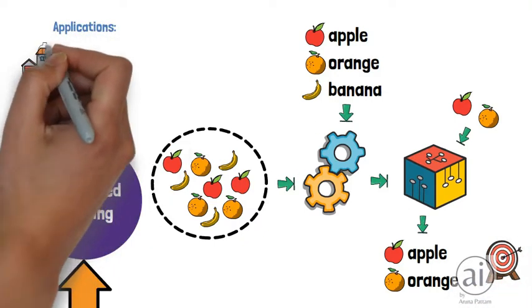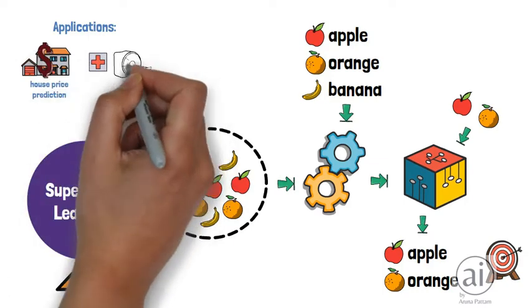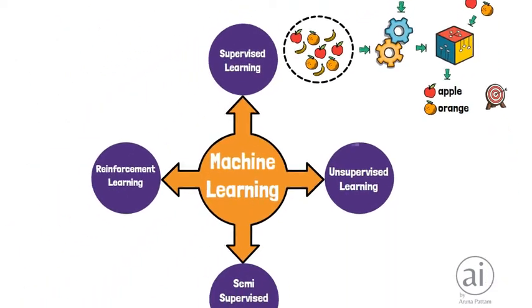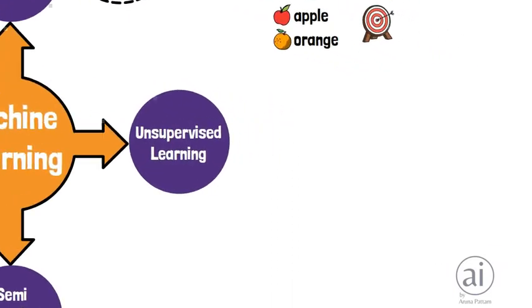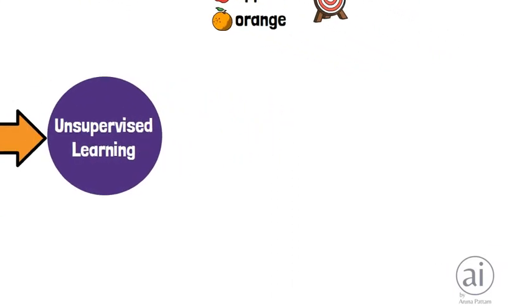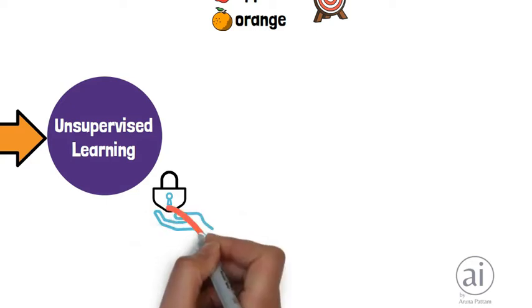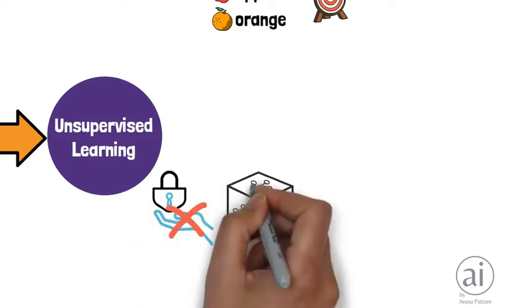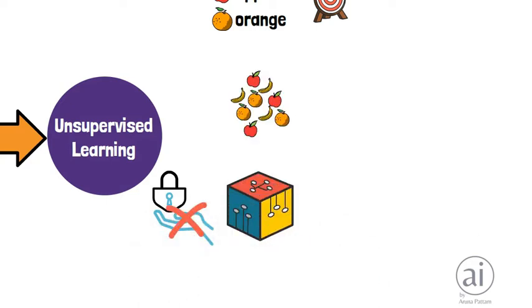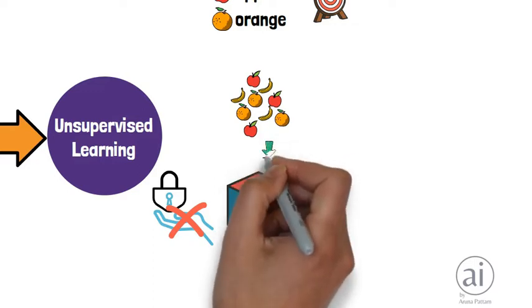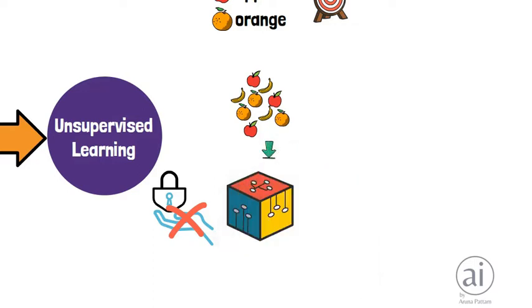Unsupervised learning needs no previous data as input. In this method, the model will learn from the data we give. Here, the data is not labeled, but the algorithm helps the model form clusters of similar types of data.